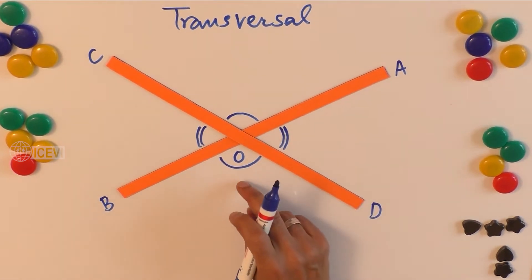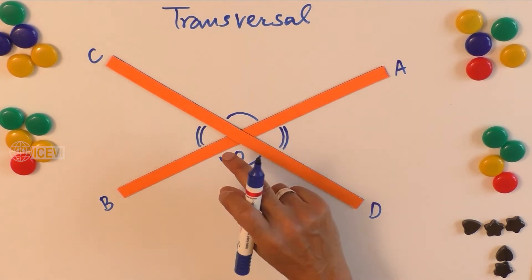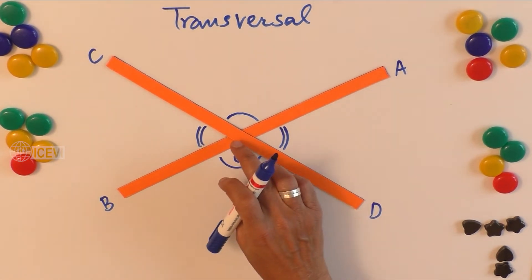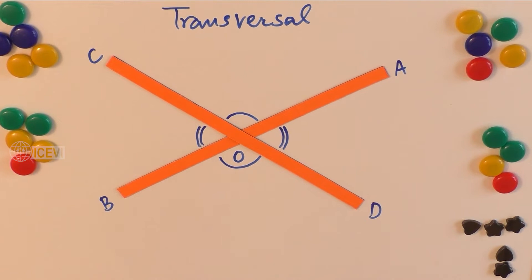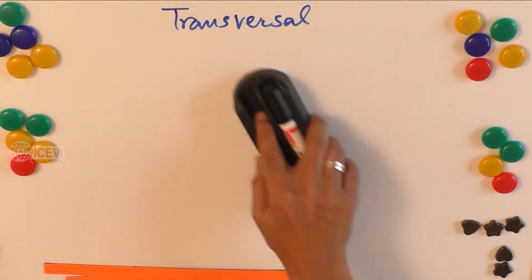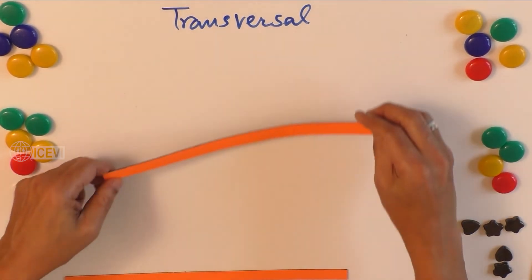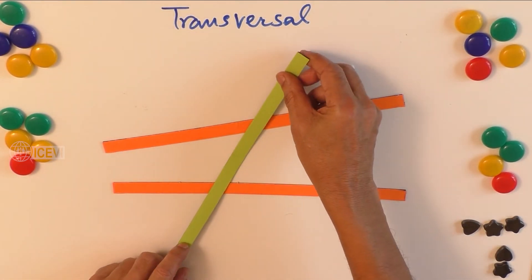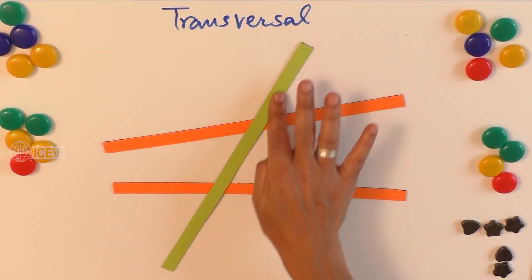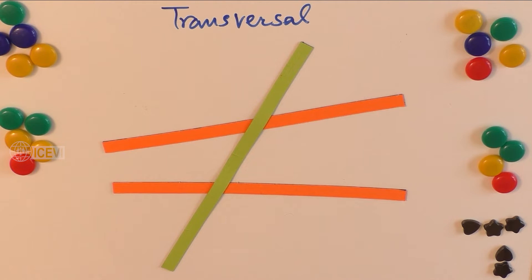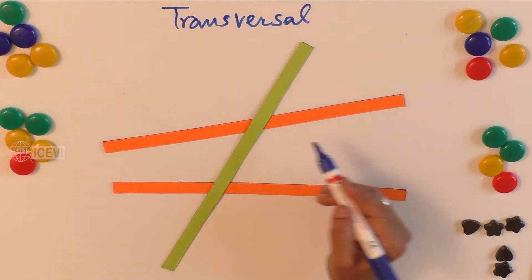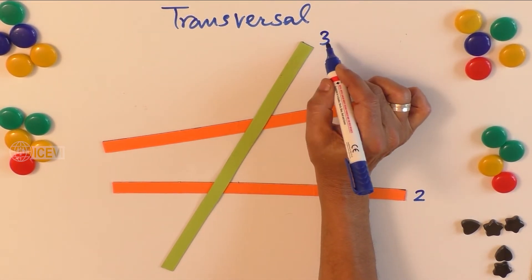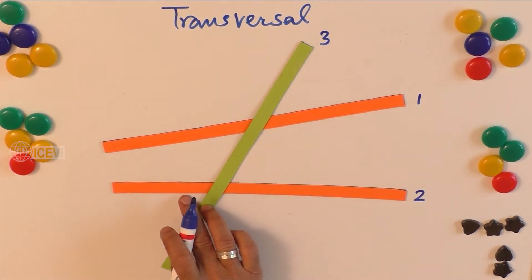This is in the case of two lines intersecting each other. We have to prove that vertically opposite angles are equal — we will demonstrate that later. Now we have another situation: when there are two lines on the same plane, we have another line going through these two lines at two distinct points.